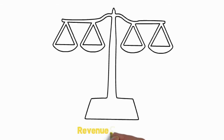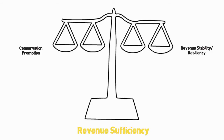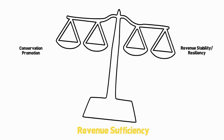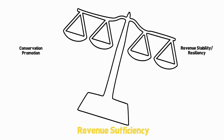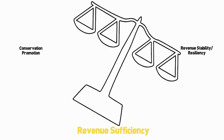When it comes to designing rate structures and setting rates, utilities usually have to balance multiple objectives. First and foremost, utilities must set rates to collect the revenue they need to operate the water utility and invest in their infrastructure. After that, utilities can and do tweak and tailor the rate structure to meet a number of objectives, including customer affordability, economic development, water conservation, and revenue stability. And this is where it can get a little complicated — some of these objectives can come in direct conflict with one another, and even sometimes with the primary objective of balancing the budget.